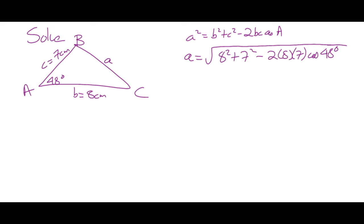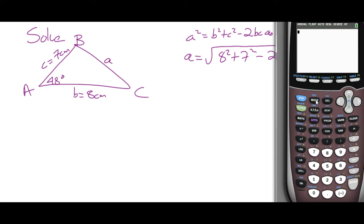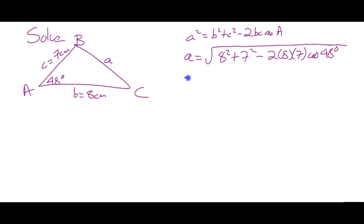Work that out. You're going to get 6.169. For the final answer we'll write little a is 6.2 centimeters. But keep the full unrounded value in your calculator for subsequent calculations — don't round to 6.2 and use that, because rounding errors will accumulate.